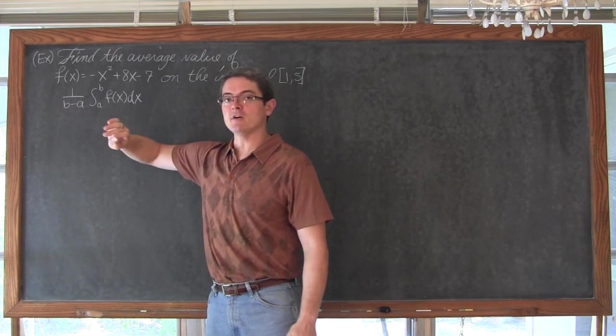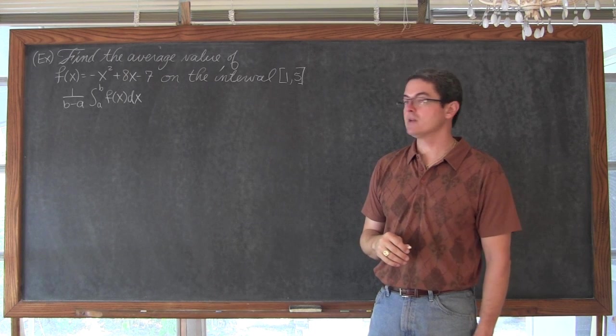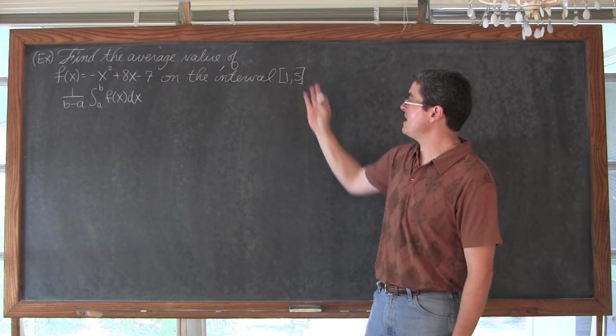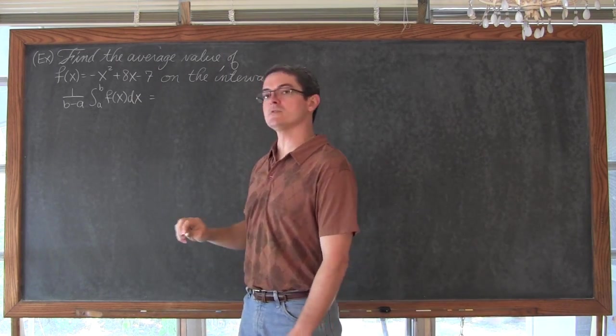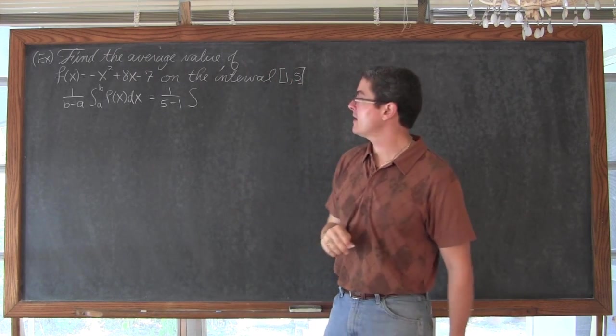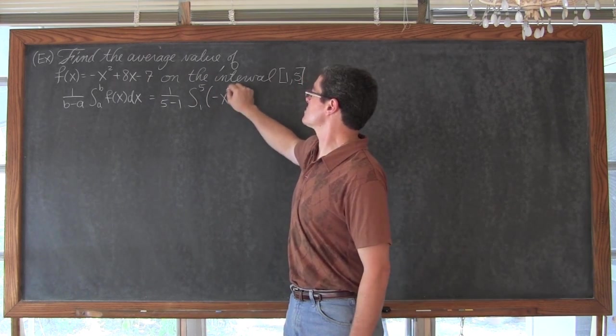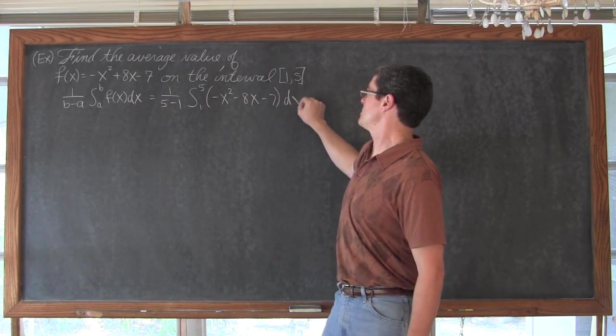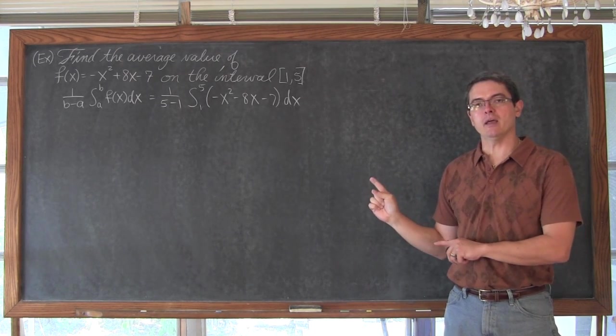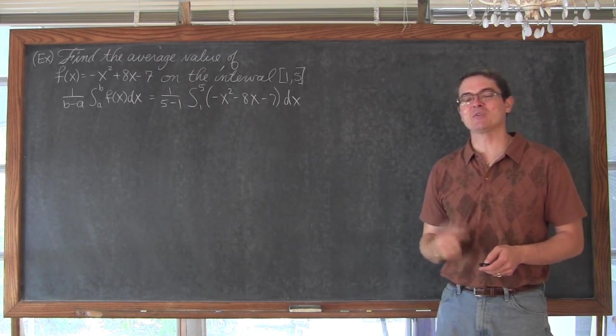So again, the average value of a function is equal to 1 over b-a times the definite integral of f dx from a to b. So, remember when they give us our closed interval the lower limit is a, or the lower value, and the upper value is b. So, we have this is going to be equal to 1 over 5-1 times the definite integral from 1 to 5 of f of x. Now, of course, f of x is negative x squared plus 8x minus 7, and don't forget the dx just for good notation. So, I am going to pause the video and come back with the solution written up. If you want to try it on your own, you might want to stop it now, and make sure that you remember how to do these definite integrals.